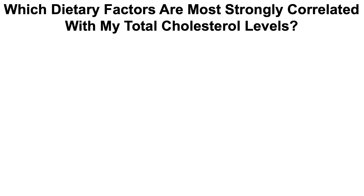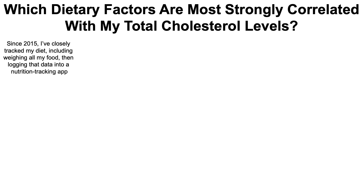So which dietary factors are most strongly correlated with my total cholesterol levels in blood? Since 2015, I haven't just tracked my blood test results — I've also tracked my diet. I weigh all my food and log that intake into an online app, which tells me my macro and micronutrients consumed on that day. For each blood test, I have an average dietary intake that corresponds to it. For example, if I do a blood test on January 1st, January 2nd starts the dietary period for the next blood test. So if I blood test on February 28th or 29th, I can take the average dietary intake from January 2nd to February 29th, and that data corresponds to the blood test on March 1st. With enough average dietary periods matched to blood test results, I can start to look for correlations between my diet and my blood tests.